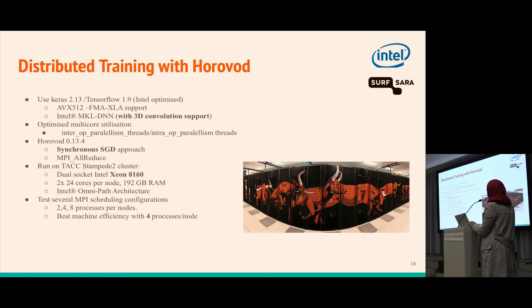This was run on the TACC Stampede 2 cluster which has dual socket Intel Xeon Phi 7250 and 24 times 2 cores per node. Different scheduling configurations were tested using 2, 4 and 8 processes per node, and the best efficiency was with 4 processes per node.